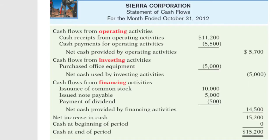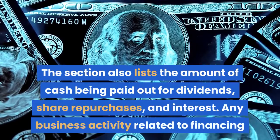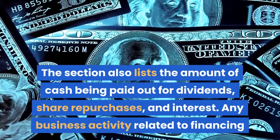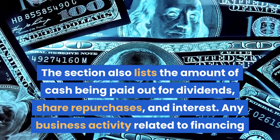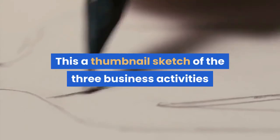Financing Business Activities. The cash flow statement's final section includes financing activities. These include initial public offerings, secondary offerings, and debt financing. The section also lists the amount of cash being paid out for dividends, share repurchases, and interest. Any business activity related to financing and fundraising efforts is included in this section of the cash flow statement. This is a thumbnail sketch of the three business activities.